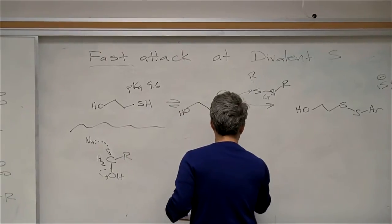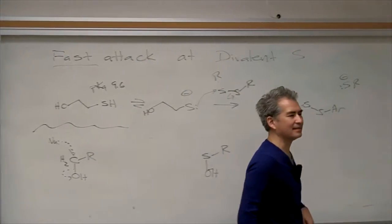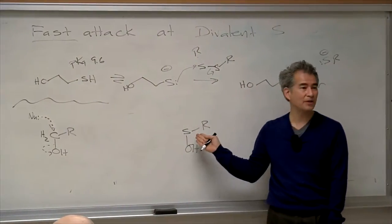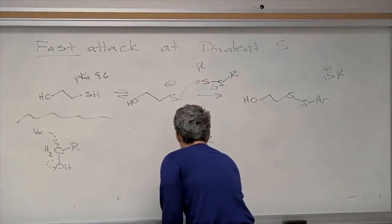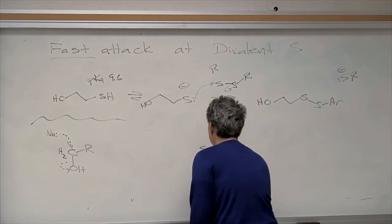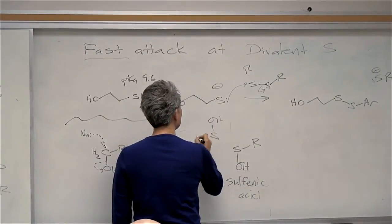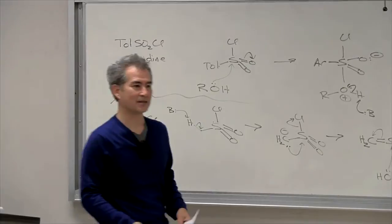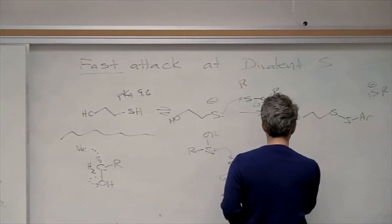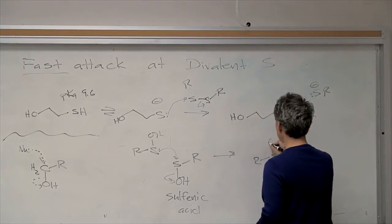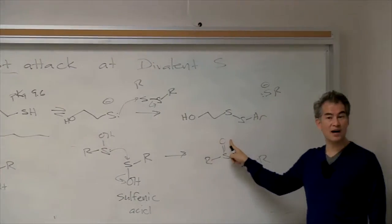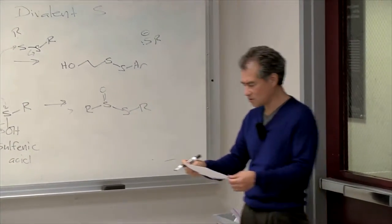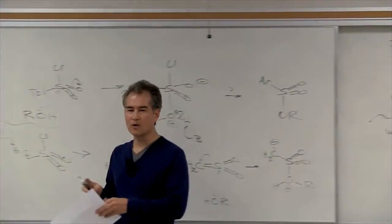This is called a sulfenic acid. It's weird because you normally think of acids as having multiple oxygens — sulfonic acid. This is still called an acid — a sulfenic acid. And they're completely unstable. You can't isolate these, because as soon as one sulfenic acid bounces into another, they displace hydroxide leaving groups. Hydroxide can act as a leaving group in an SN2 reaction here. You can't stop this from happening. This has to do with the very fast reactivity of divalent sulfur. The important point is it's very fast to attack a leaving group on sulfur — super duper fast. Inconveniently fast, because you can't work with sulfenic acids.